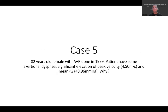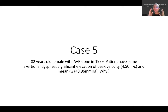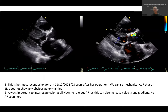Case five — our final case — is an 82-year-old female who had aortic valve replacement in 1999, over 20 years ago. She has exertional dyspnea. On echocardiogram the peak velocity across the aortic valve is very high at 4.5 m/s and mean gradient is 48.96 mmHg. The question is: is the prosthesis obstructed, is this patient-prosthesis mismatch, is this high-flow state, or is there concomitant aortic regurgitation?